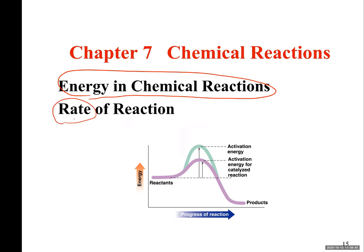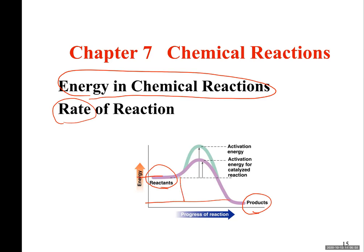Essentially what we said is that if we are starting from reactants and we are going to these products, because the products have less energy than reactants, this is the difference of energy. So reactants are losing energy in this process. This is an exothermic reaction.